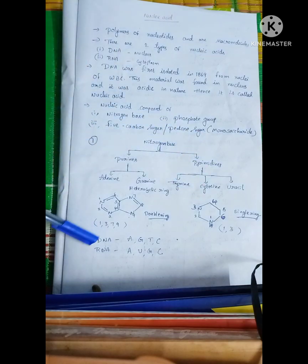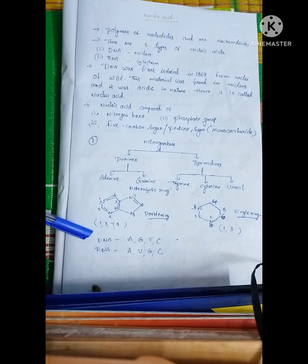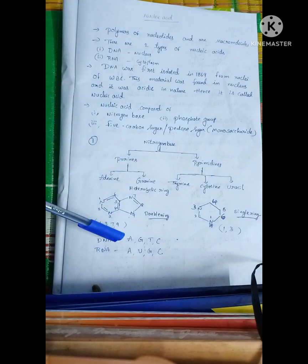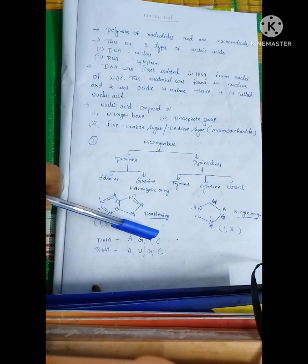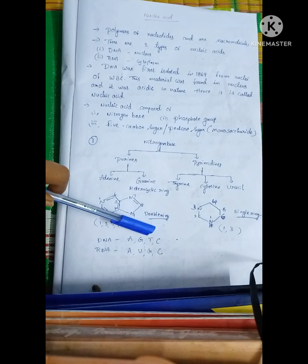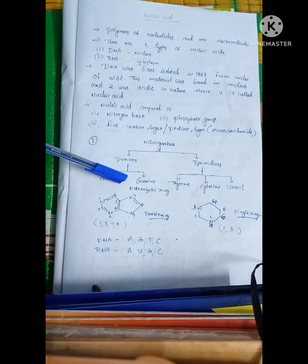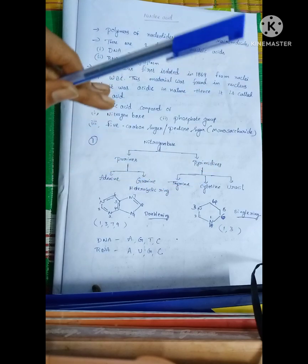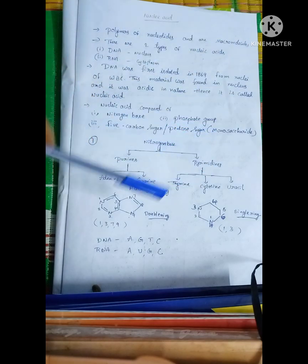In DNA, there are four nitrogen bases: adenine, guanine, thymine, and cytosine — two purines (adenine, guanine) and two pyrimidines (thymine, cytosine).